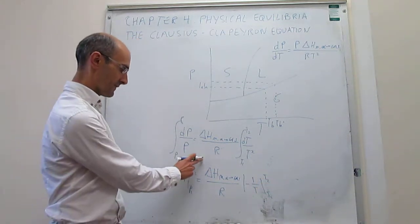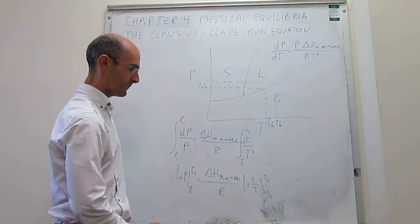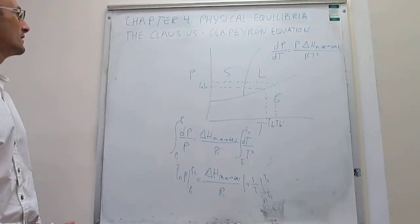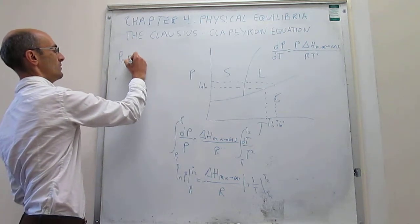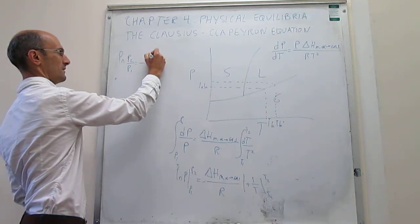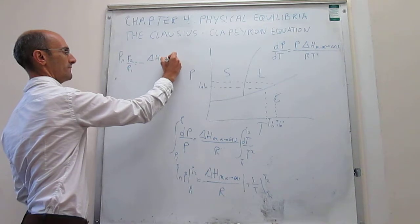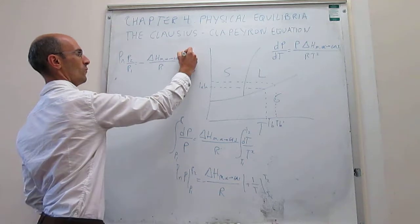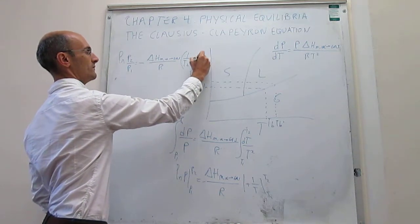We can modify this expression a little bit by removing that minus sign and putting it out here. The final expression for the integrated Clausius-Clapeyron equation is: natural log of P2 over P1 equals minus the enthalpy of the phase transition (alpha to gas) over R, times (1/T2 minus 1/T1).